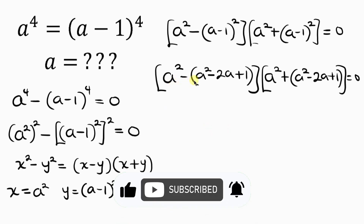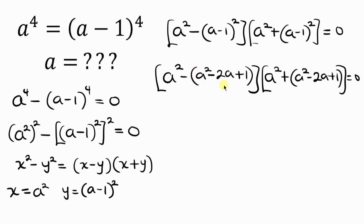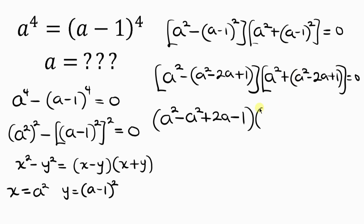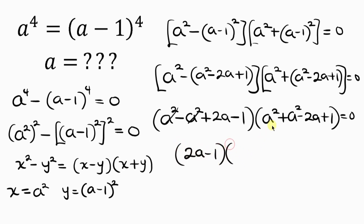Our next step is to use the negative sign to expand the inner bracket. So we have A squared, then minus A squared, then minus times minus gives plus 2A, and minus times plus gives minus 1. For the second bracket: A squared plus A squared minus 2A plus 1, equal to 0. Now A squared minus A squared cancels, leaving 2A minus 1. And A squared plus A squared gives 2A squared, giving us 2A squared minus 2A plus 1, equal to 0.